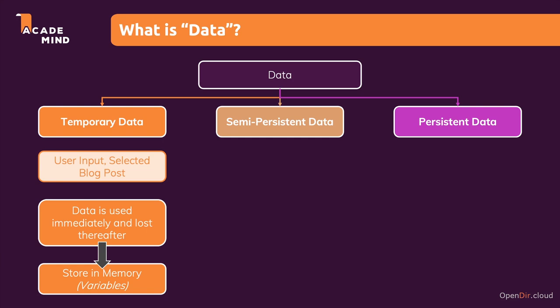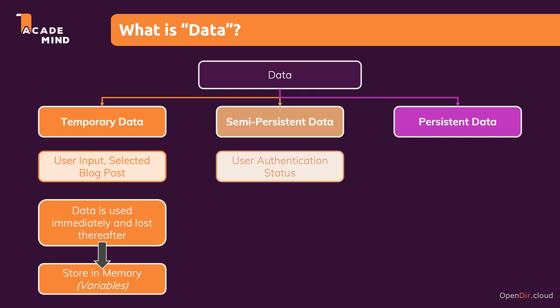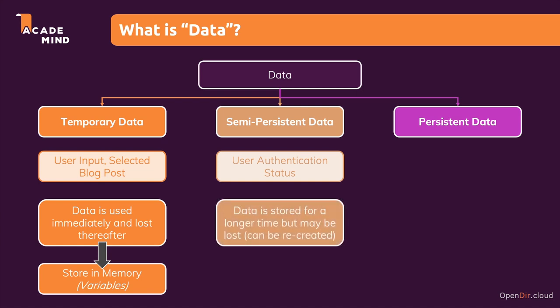Not everything should be temporary data. For example, we might have some data which I like to call semi-persistent data. An example would be the user authentication status. If a user logged in, we might want to save the fact that the user is logged in — but of course a user may log out in the future, or we might want to automatically log out a user after a couple of minutes or hours, like online banking where you're logged out after 15 minutes. So this is data which is kind of persistent, which we don't just need once, but where it is okay if it's lost, or where we even might want to clear it deliberately — because it can be recreated, for example if a user logs back in.